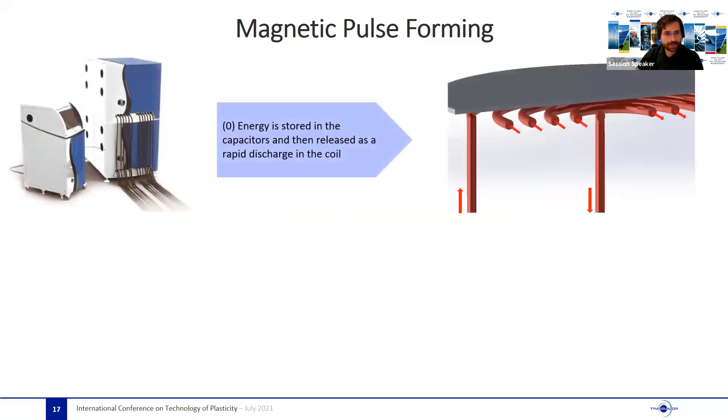How everything works. First, a certain amount of energy, somewhere between 5 kilojoules to 20 kilojoules, depending on the application, is stored in a capacitor bank. Then this energy is released on a coil that is placed close by the workpiece, generating an intense magnetic field.